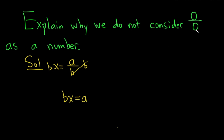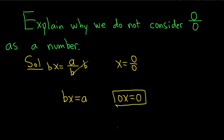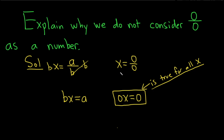So if we decide to say that 0 over 0 is going to be a number and call it x, then we end up with the equation 0x equals 0, where x is the number we are trying to define as 0 over 0. The problem is, this equation is true for all x — it is always true regardless of the value of x. So there is no unique number that we can assign to 0 over 0, because we would get an equation that holds for all x, and there is no way we can define this.